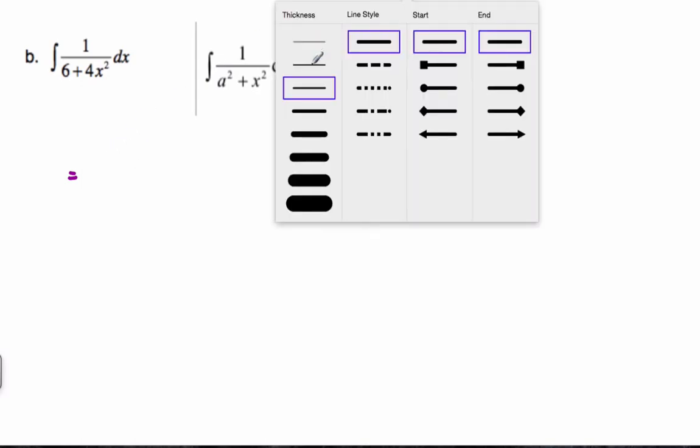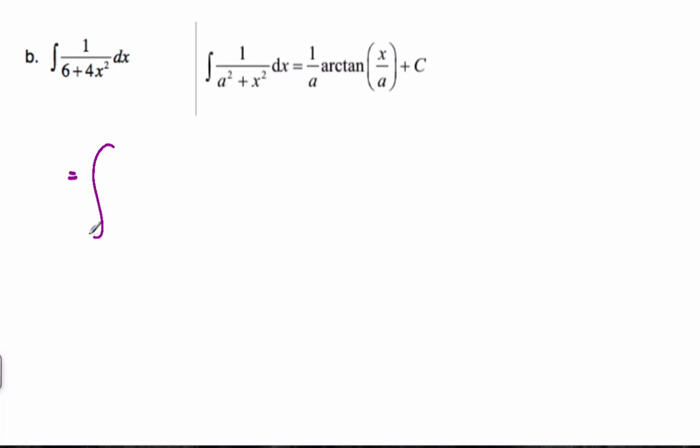Let's try another example. Here we have 1 over 6 plus 4x squared dx. Well, if I'm going to take the antiderivative, here's my formula booklet formula, and I need to make it look like this scenario. And I have a 4x squared here. And one of the things I can do is I'm going to rewrite this integral. I'm going to pull out, on the bottom, I'm going to pull out a 4,